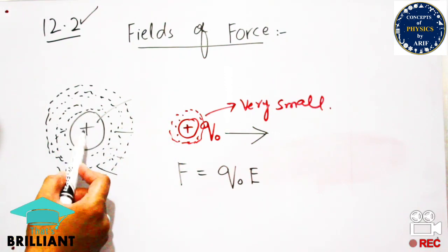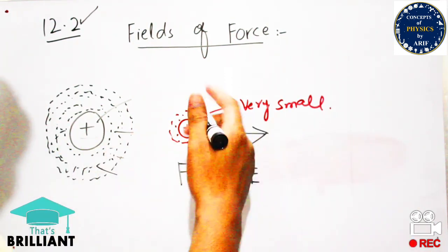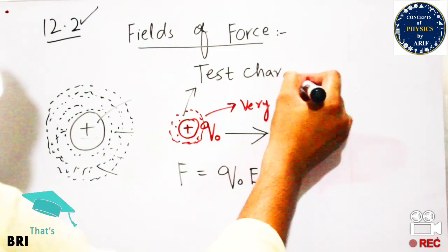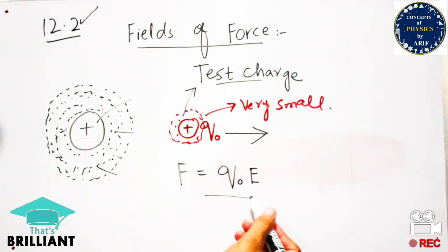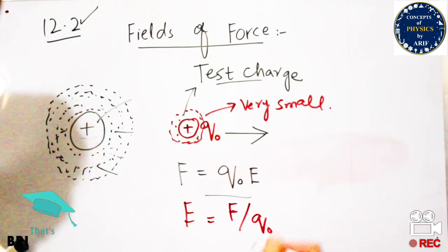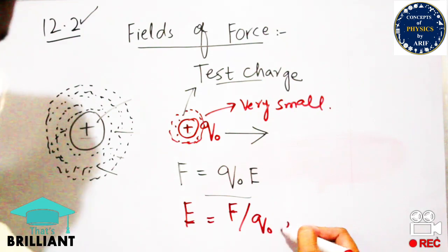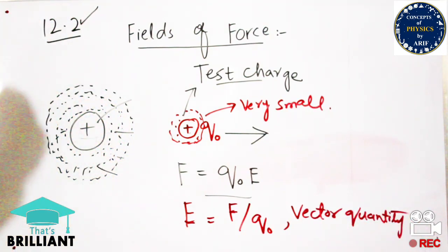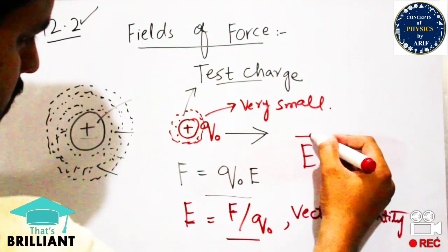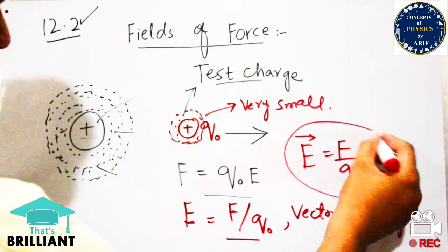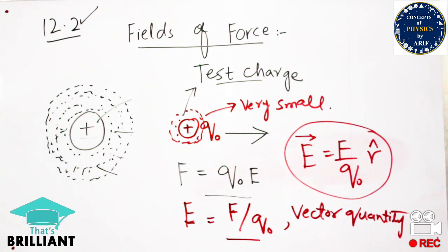The force has a rightward direction, so the electric field direction is also rightward. The force is F equals q-naught times E, where E is the electric field. So E equals F over q-naught. Since the electric field is a vector quantity with direction, we write E equals F over q times r-hat, the unit vector showing the direction of the electric field.